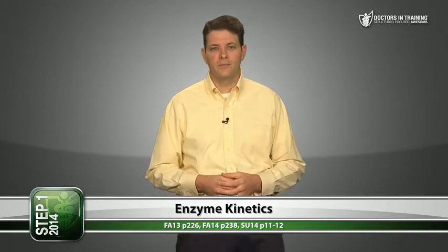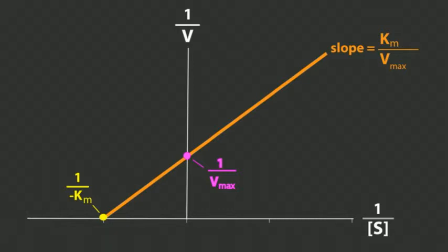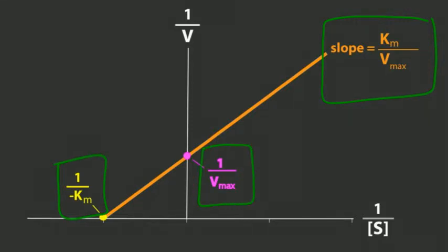Now let's look at this in a different way — this is called a Lineweaver-Burk plot. It's the same data plotted on different axes. In a Lineweaver-Burk plot, the x-axis is 1/S (1 over substrate concentration) and the y-axis is 1/V (1 over reaction velocity). This straightens out the curve. The three points you need to memorize are the slope, the x-intercept, and the y-intercept. The slope of a Lineweaver-Burk plot is KM over Vmax. The x-intercept is 1 over negative KM. And the y-intercept is 1 over Vmax.